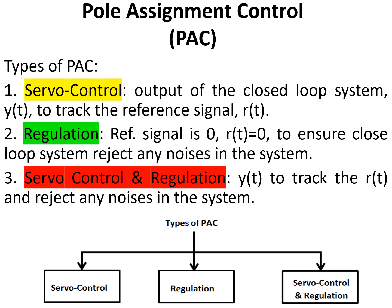There are three types of pole assignment control problems. Number one: servo tracking control. The aim of servo control is for the output of the closed loop system, YT, to track the reference signal RT. Number two: regulation. In regulation control, the reference signal is zero, RT = 0, and the aim is to ensure that the closed loop system rejects any external disturbance or noise in the system. Number three: servo tracking control and regulation. Here, the control objective is for the output of the closed loop system, YT, to track the reference signal RT, and at the same time reject any external disturbance or noise in the system.